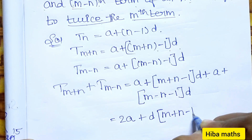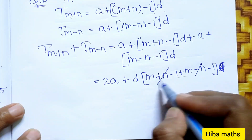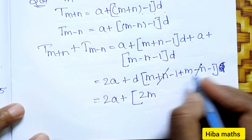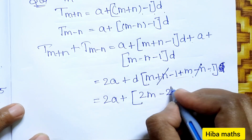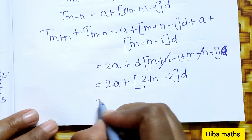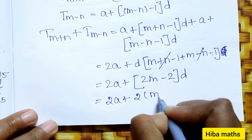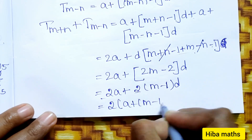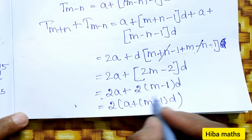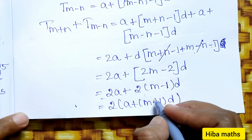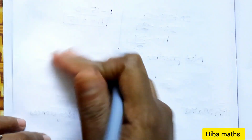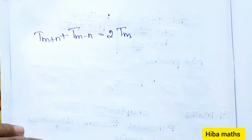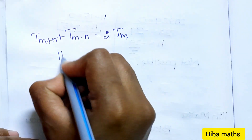The +n and -n cancel out, leaving 2a plus 2(m minus 1)d, which equals 2[a plus (m minus 1)d]. This is exactly 2 times t(m). Therefore, t(m+n) plus t(m-n) equals 2·t(m). Hence proved.